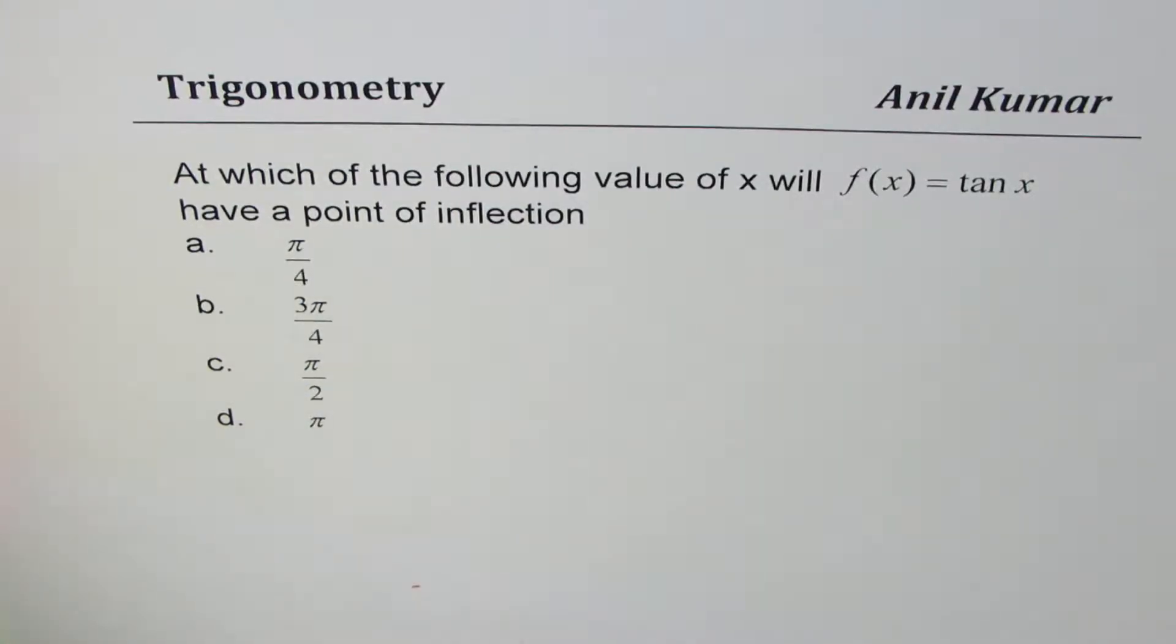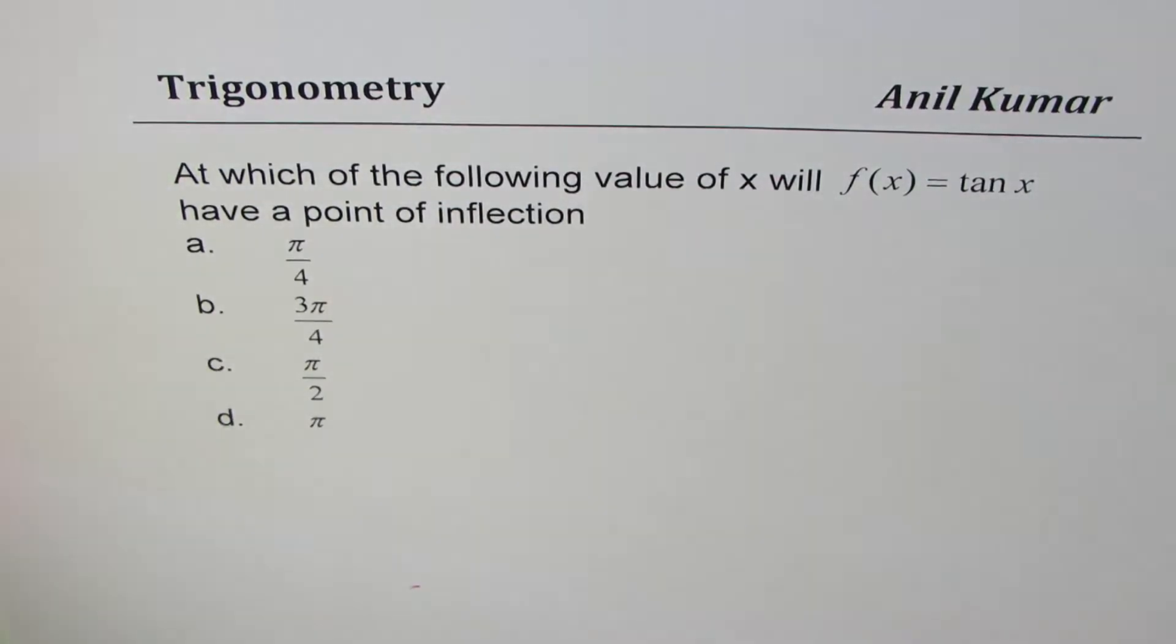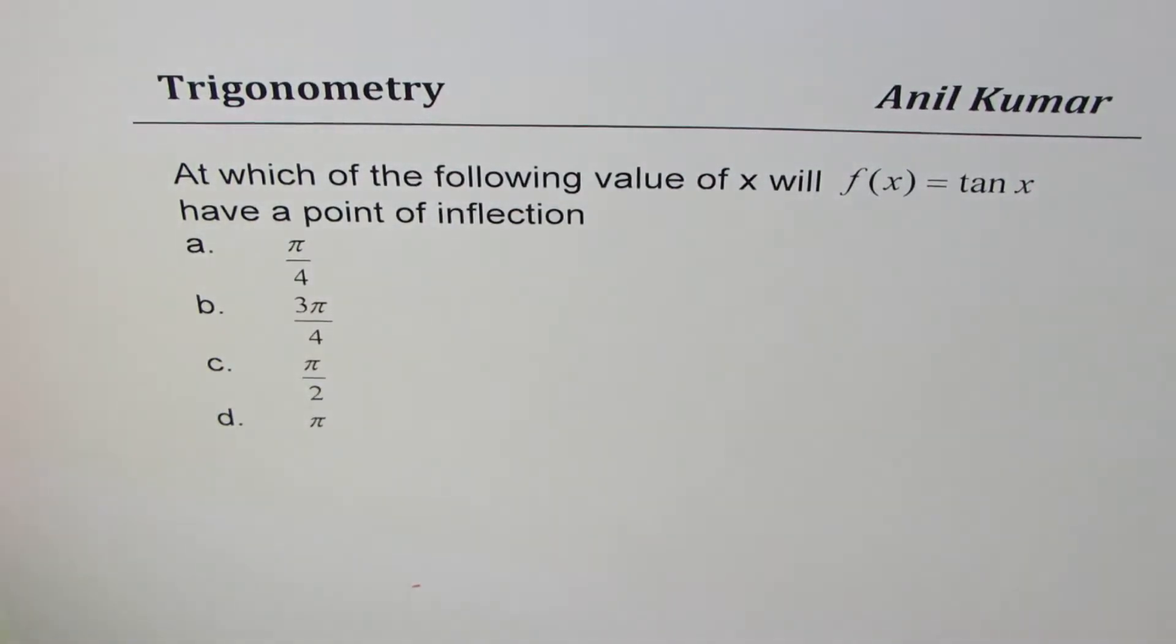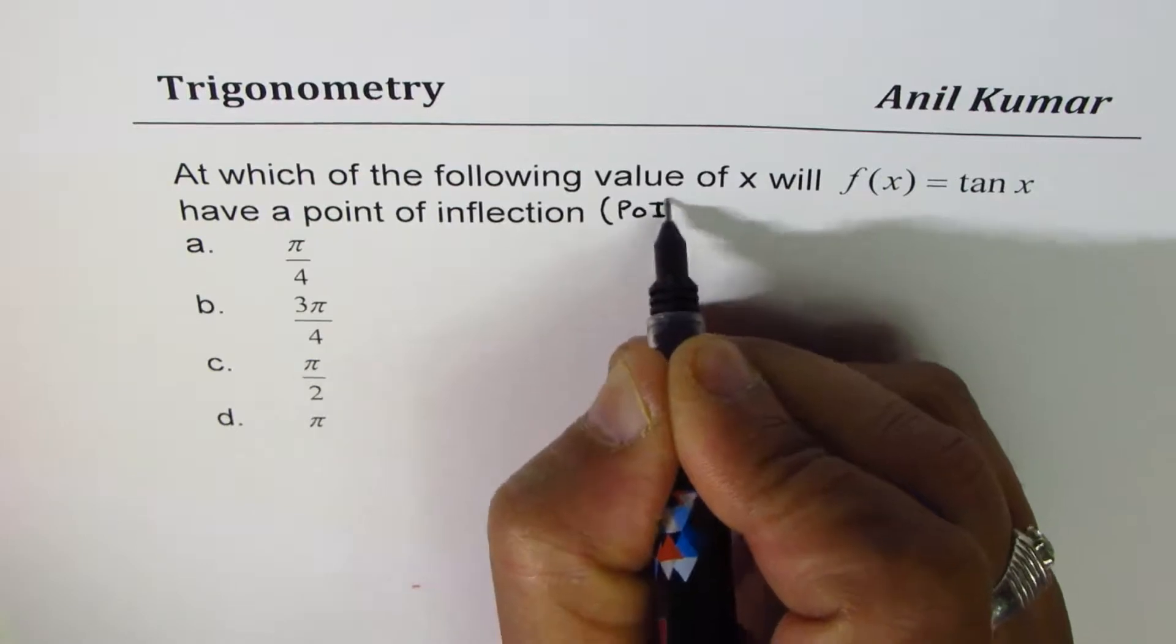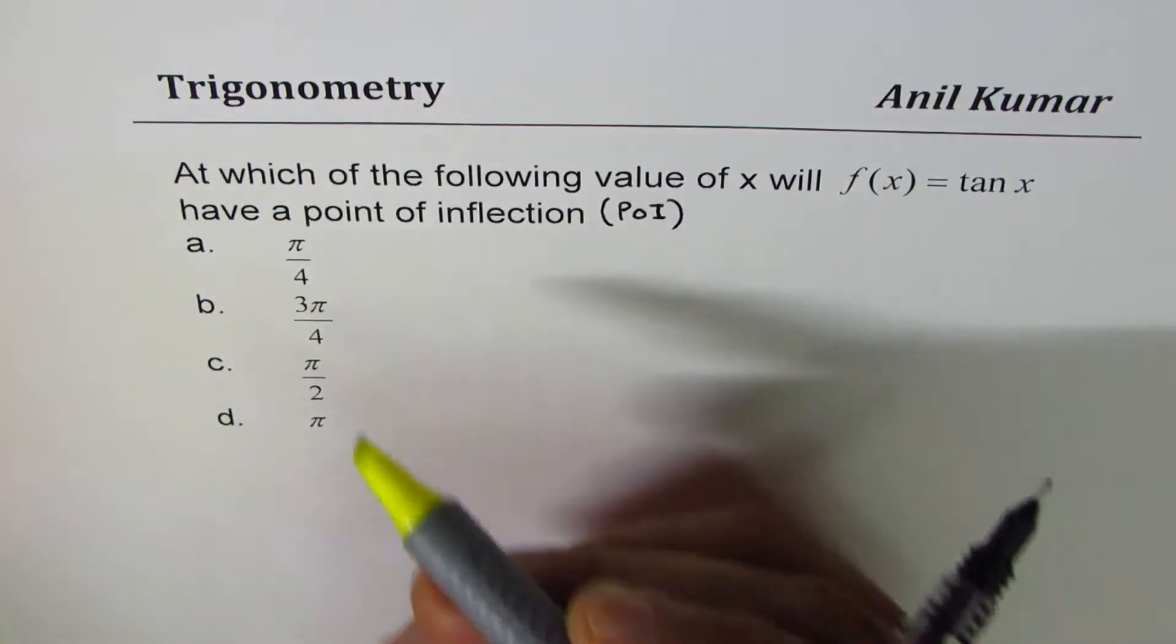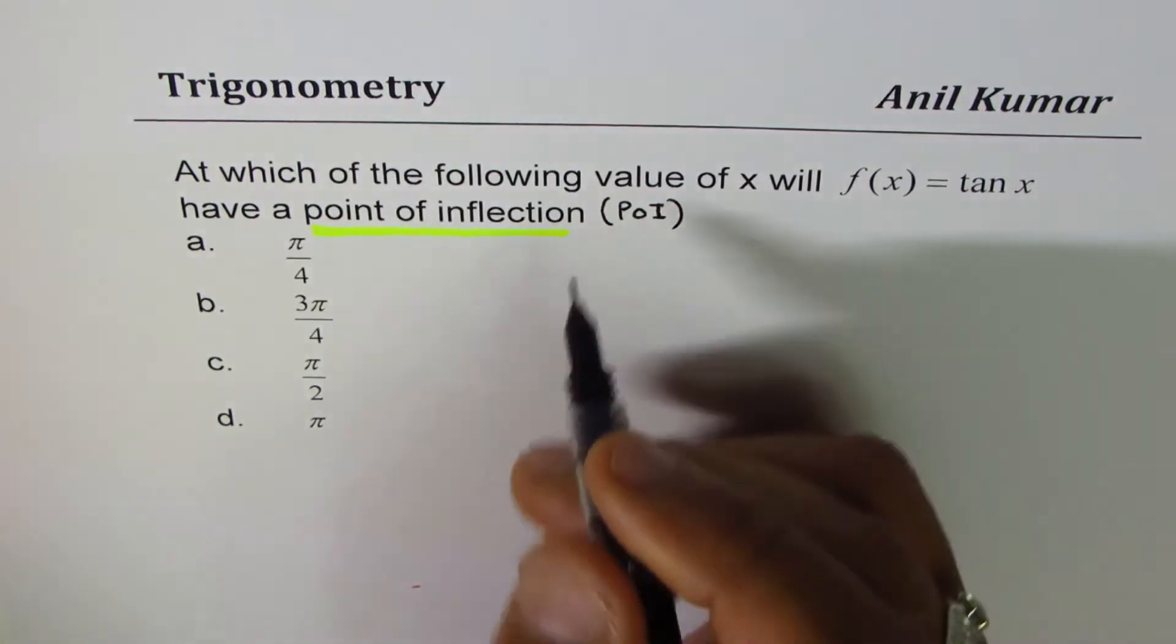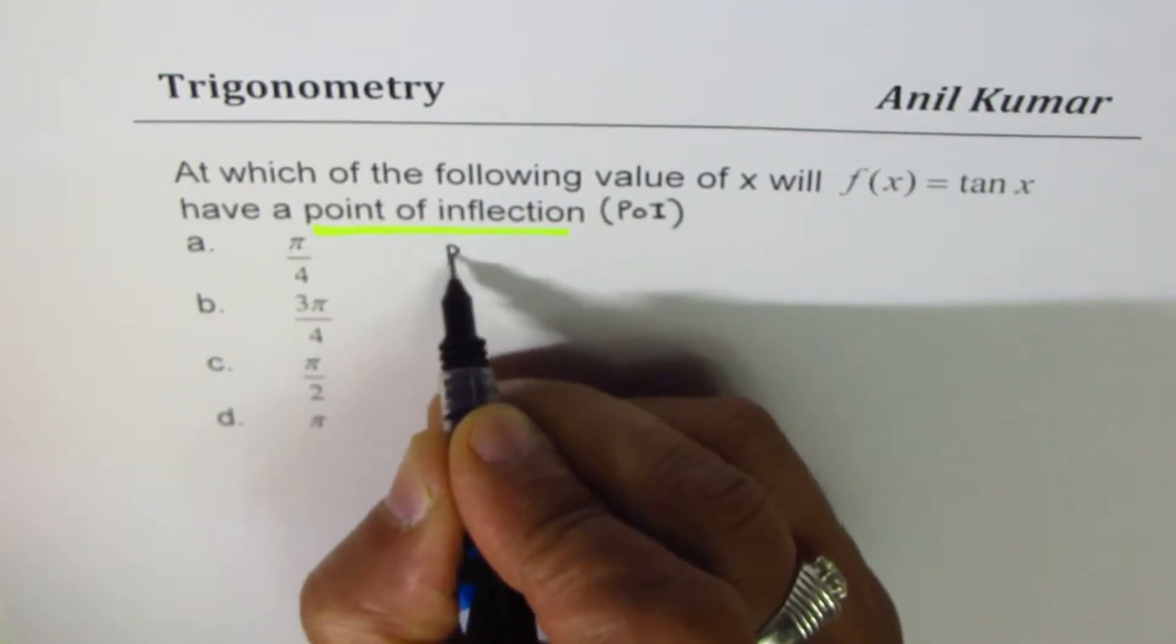So we are given four choices here. Now let's understand what is point of inflection. Let me write down that first, so point of inflection - I'm writing this as POI in short. Point of inflection is change of concavity.